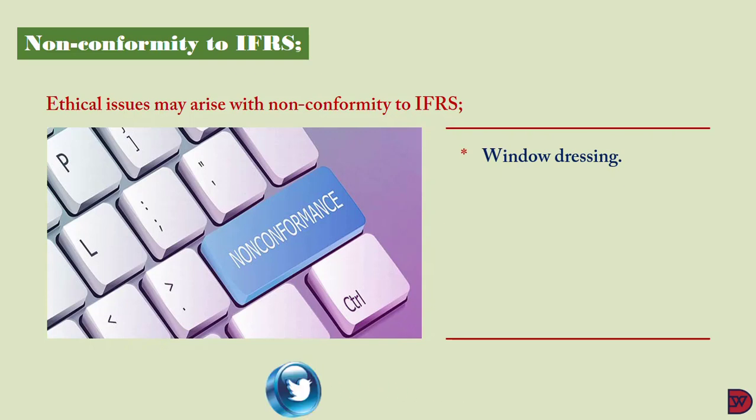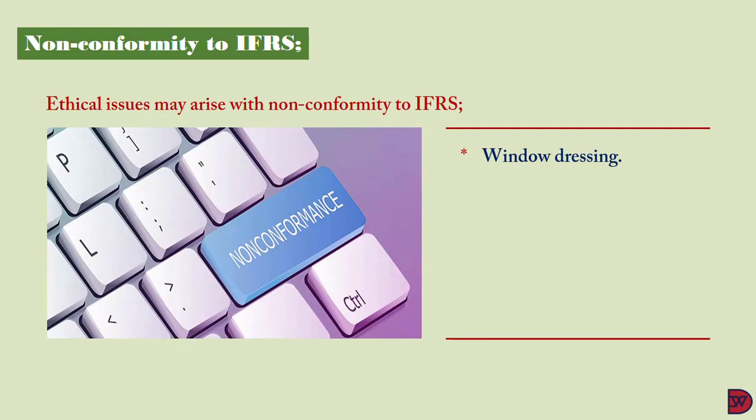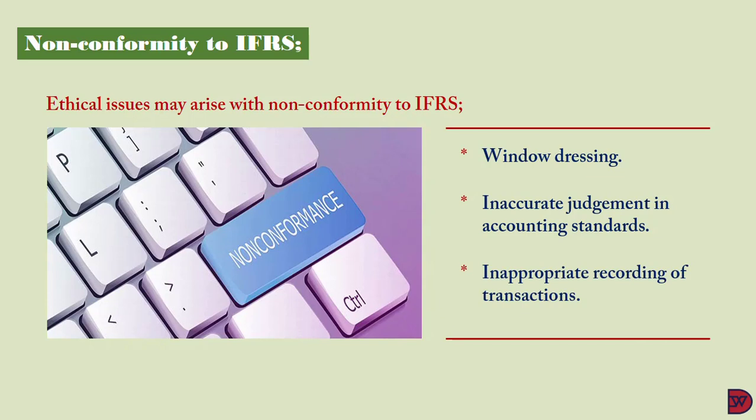First, window dressing — where they manipulate certain figures in the financial statements. For example, they will give more than necessary credit to customers in order to increase their revenue. They might also exercise judgment in applying accounting standards — for instance, if they want to increase profits, they might choose a depreciation method that decreases expenses to lead to higher profits. Lastly, inappropriate recording of transactions — they might choose to record a bad debt when there is no indication of it, or refuse to record it when there is clear evidence of its existence.